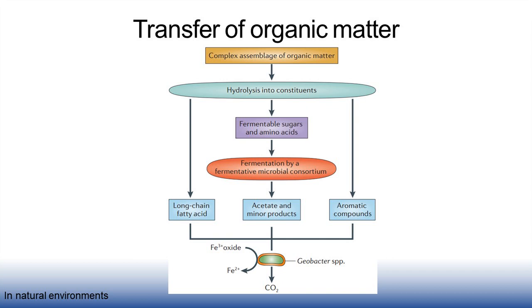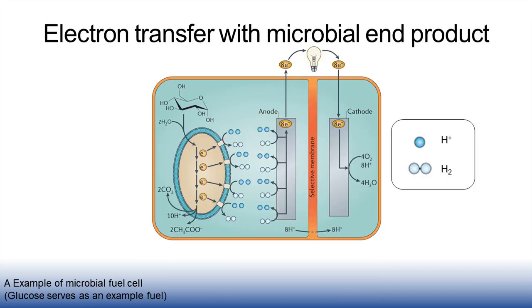The key difference in microbial electricity production versus natural biogeochemical processes, like ferric oxide reduction, is that the electrons are transferred to an electrode rather than a natural electron acceptor. The following are examples of microbial fuel cells producing electricity through different mechanisms of electron transfer to the anode.